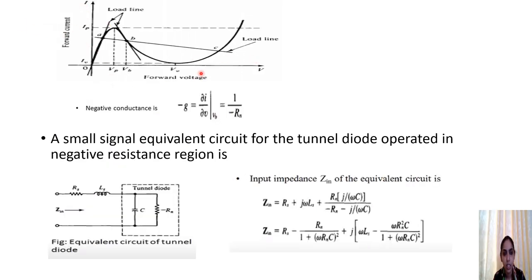We now focus on the negative resistance region since it is where the tunnel diode works as a microwave amplifier or oscillator. The negative conductance, indicated by minus G, can be written as ∂I/∂V at the point VV. This equals 1 divided by minus Rn, where Rn represents the magnitude of the negative resistance of the tunnel diode.